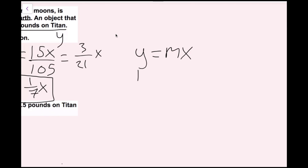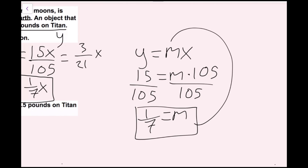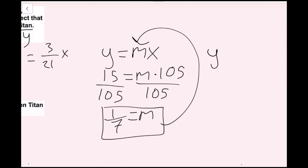So I get 15 equals m times 105. I'll divide by 105 on both sides. We know 15 over 105 simplifies to one-seventh. That is m, so now all I have to do is plug this m back into the original equation, and I get the same exact equation: y equals one-seventh x.